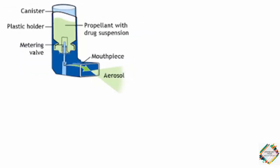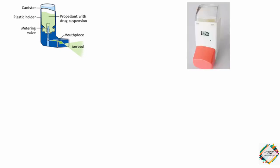The pressurized metered dose inhaler has a canister within which there is a propellant with drug suspension, held by a plastic holder. Then there is a metering valve, and a mouthpiece through which the aerosol is released. Some PMDIs also come with a dose counter, making it easy to track the number of puffs remaining in the device.